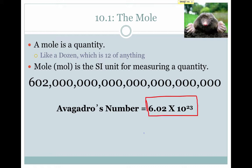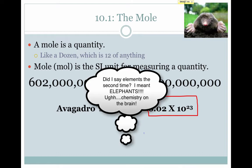6.02 times 10 to the 23rd is Avogadro's number. We've talked about Avogadro before, and we'll talk a little bit more about him in class and how he came up with this number. But this is the value of the mole — the quantity of the mole. If I have a mole of atoms, I have 6.02 times 10 to the 23rd atoms. If I have a mole of molecules, I have 6.02 times 10 to the 23rd molecules. If I have a mole of elephants, I have 6.02 times 10 to the 23rd elephants, and so on and so forth.